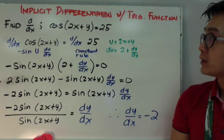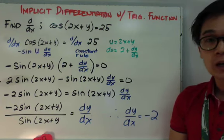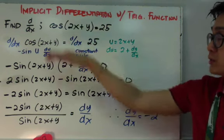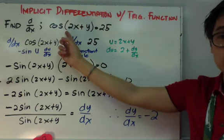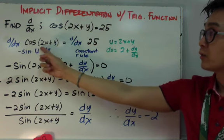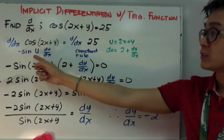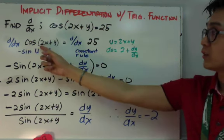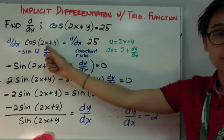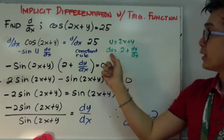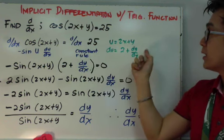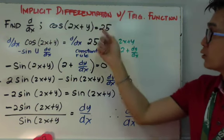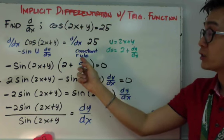kukunin natin yung derivative ng cosine(2x + y) = 25. Gagamit tayo ng implicit differentiation kasi meron siyang y dun sa function. So to simplify it, yung step by step process: kailangan natin i-take yung derivative ng first term at yung derivative ng second term. Yung cosine(2x + y), yung derivative niya uses negative sine(u) du/dx as its derivative. So yung u is 2x + y, at yung du/dx, o yung derivative ng u niya is 2 + dy/dx. Kasi yung derivative ng 2x is 2, derivative ng y is 1 dy/dx.